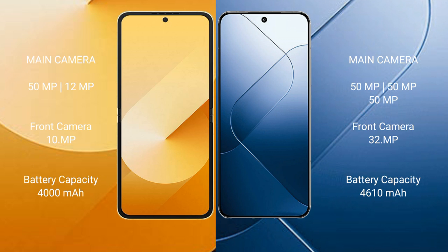Samsung Galaxy Z Flip 6 features a dual rear camera setup of 50MPxL plus 12MPxL, and a 10MPxL front camera. Xiaomi 14 features a triple rear camera setup of 50MPxL plus 15MPxL plus 15MPxL, and a 32MPxL front camera. Samsung Galaxy Z Flip 6 has a 4000mAh battery with 25W fast charging support, while Xiaomi 14 has a 4610mAh battery with 90W fast charging support.